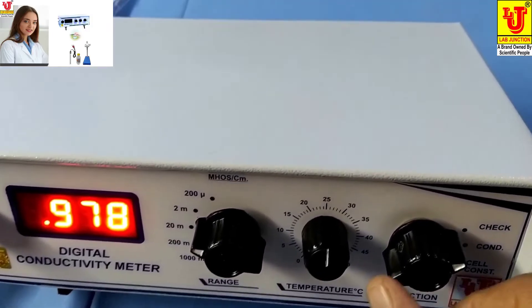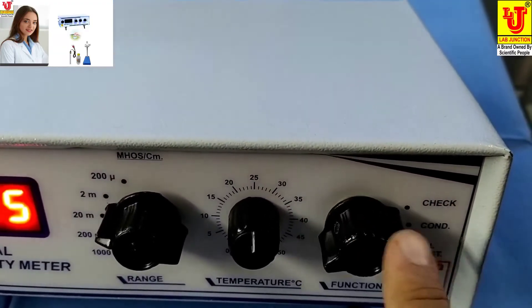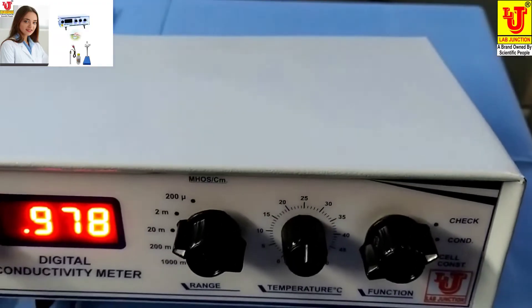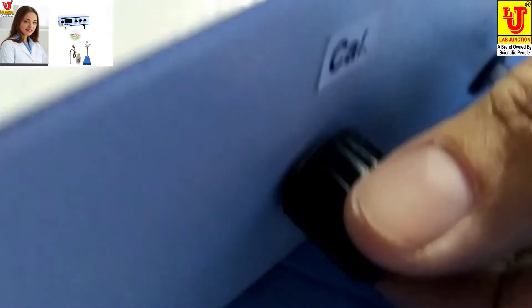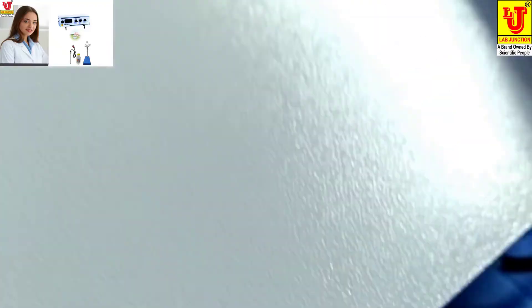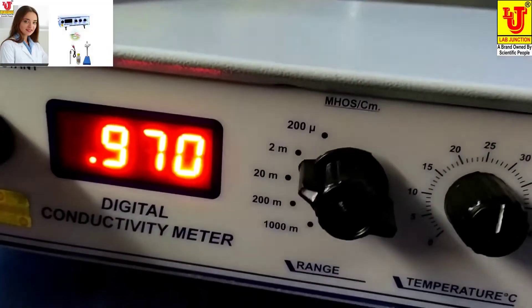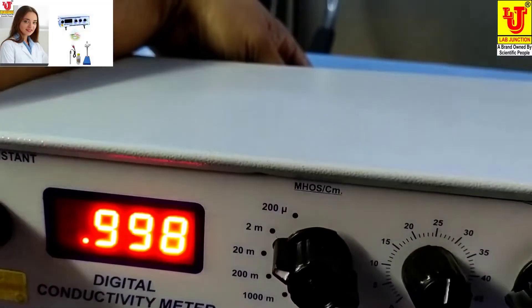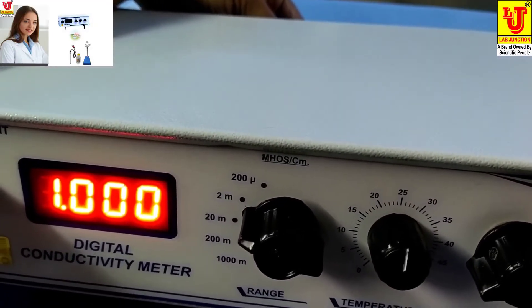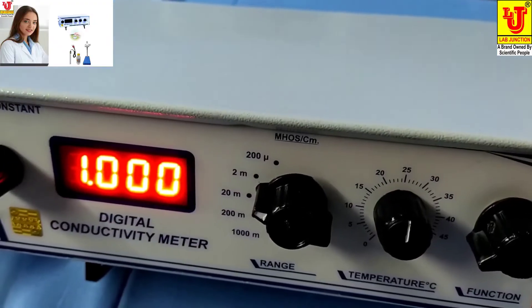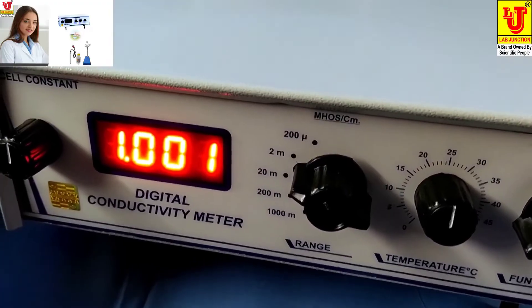Now first, you have to do function control on check position like this. On the back side, one cal knob is there, you have to set like this. You have to set 1.000. Now on the back side, you have to set the temperature. Suppose this is blinking, again you can set that there.